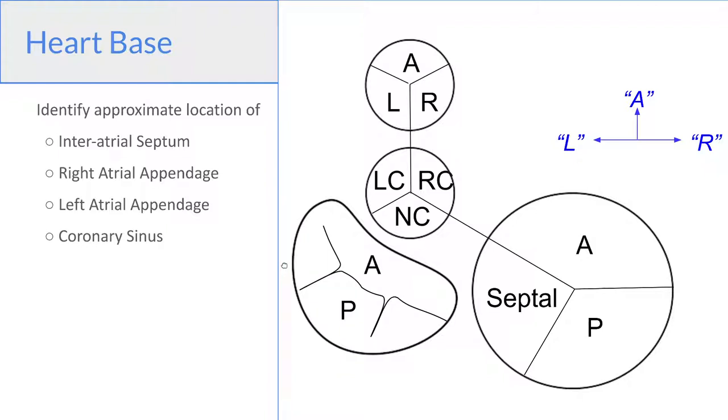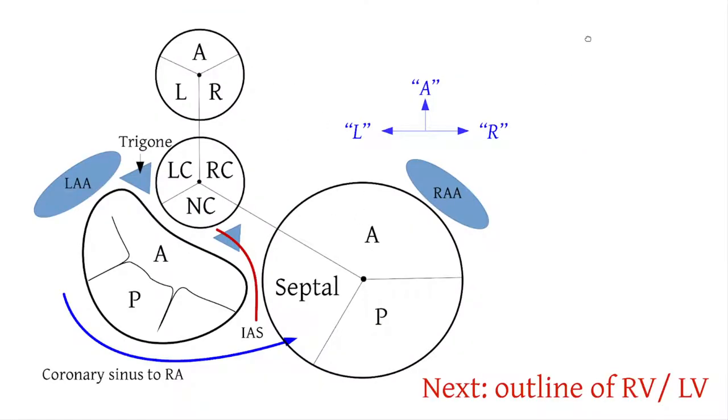Now try to picture where the intra-atrial septum is going to be, where the right and left atrial appendages would be, and where the coronary sinus would be in the schematic. And here we've added those in so you can see the atrial appendages on the right and the left. You can see the intra-atrial septum between the tricuspid and the mitral valves separating the two atria and the coronary sinus wrapping behind the mitral annulus and going into the right atrium at the tricuspid valve.